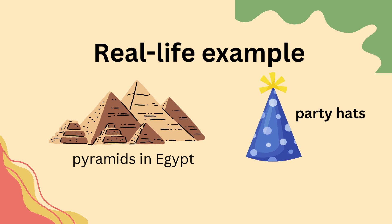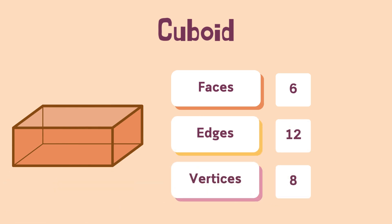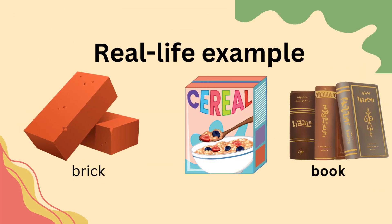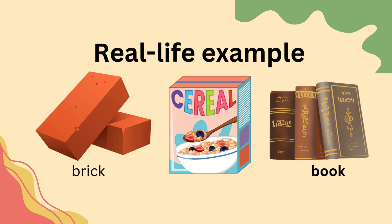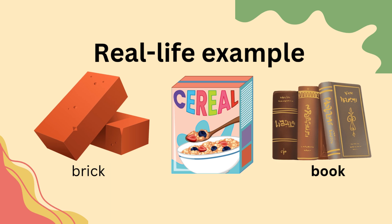I'm tall and full of history. Hey, hey. I'm a cuboid. I have six faces, like a cube, but some are rectangles. I have 12 edges and eight vertices. I look like a shoebox, a book, or even a brick. I'm long and strong.